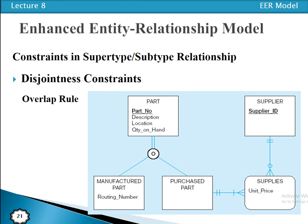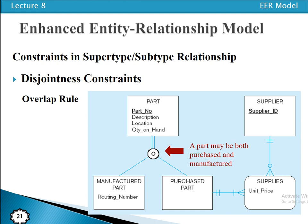The overlap rule states that an entity instance of the super type can simultaneously be a member of two or more sub types. For example, a part can be both a manufactured part and a purchased part at the same time. This concept is called the overlap rule.